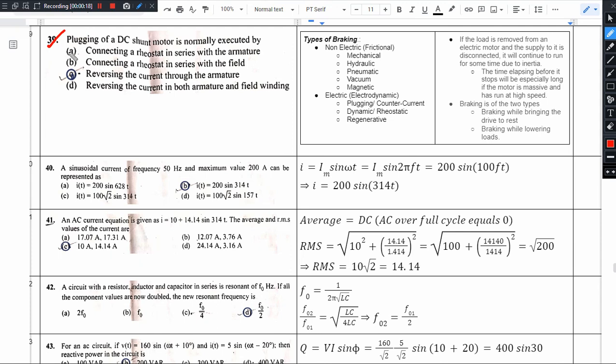First option is connecting the rheostat in series with the armature. Plugging does not use rheostat, so this is not the answer. Second, connecting rheostat in series. We do not use rheostat in plugging.